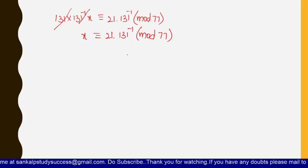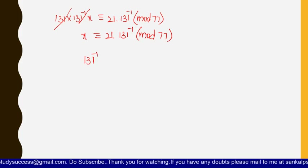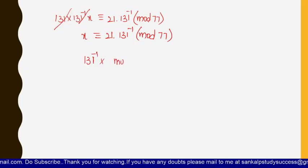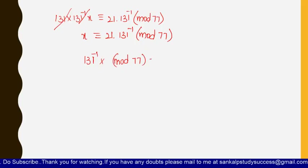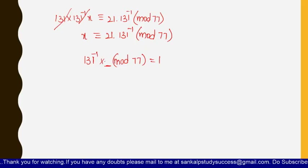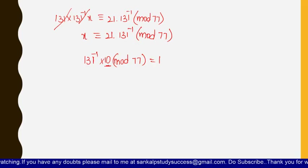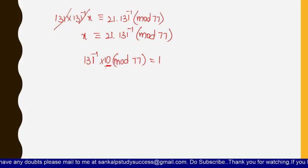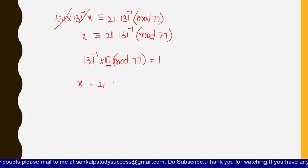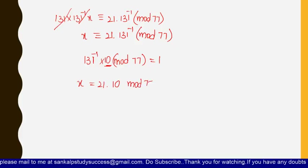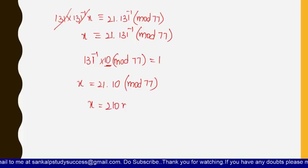To find 131⁻¹, we need a number such that when multiplied by 131 and taken mod 77, we get 1. By trial and error, 131 × 10 mod 77 = 1, so the least residue of 131⁻¹ is 10. Substituting, x ≡ 21 × 10 (mod 77), which gives x = 210 mod 77.